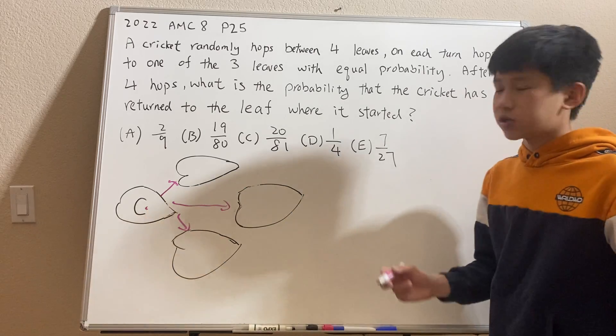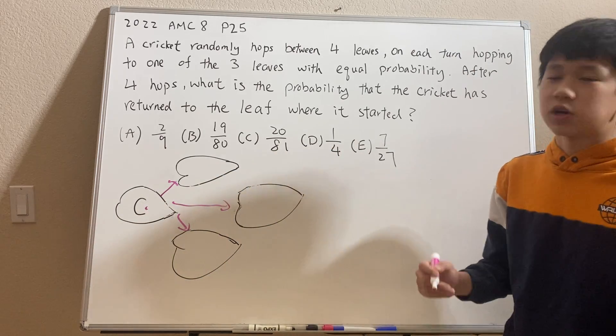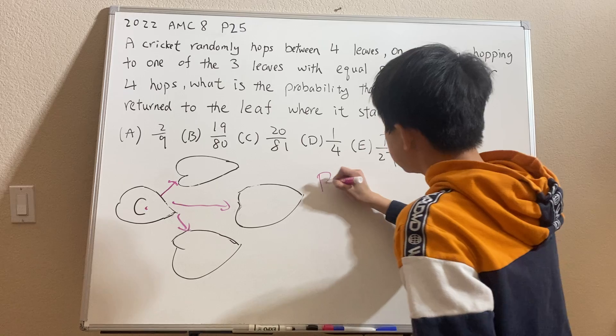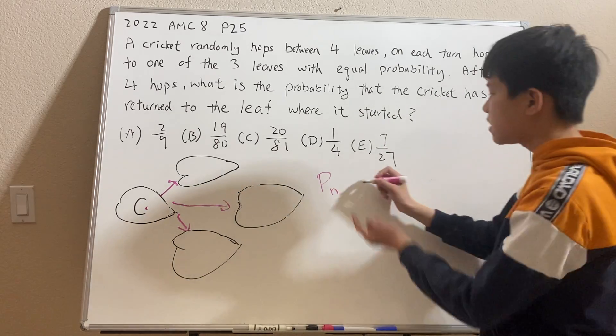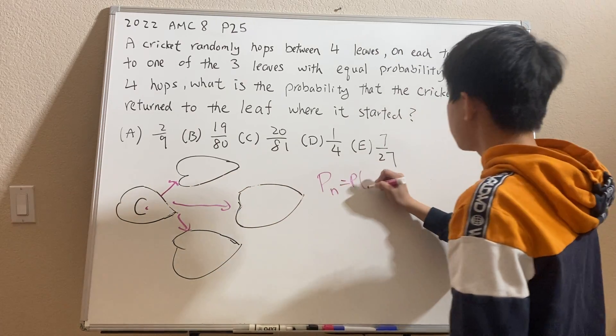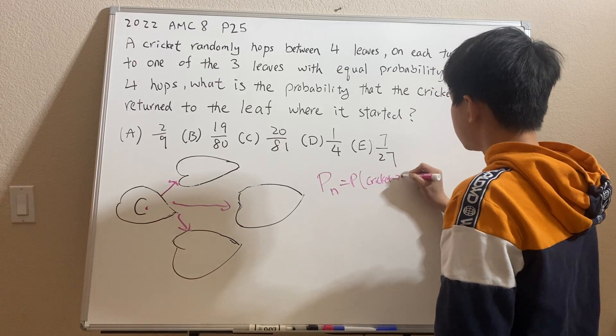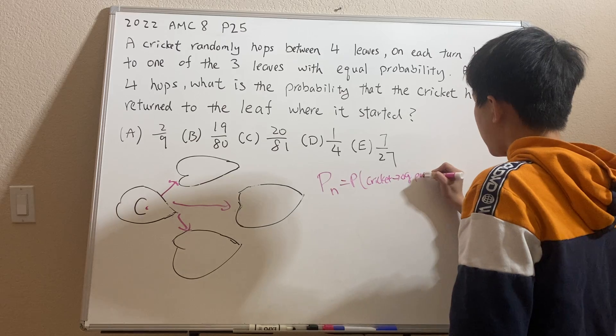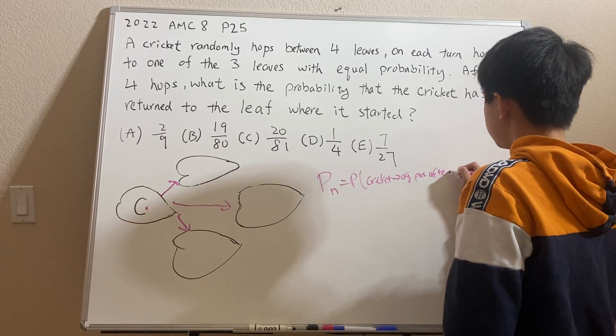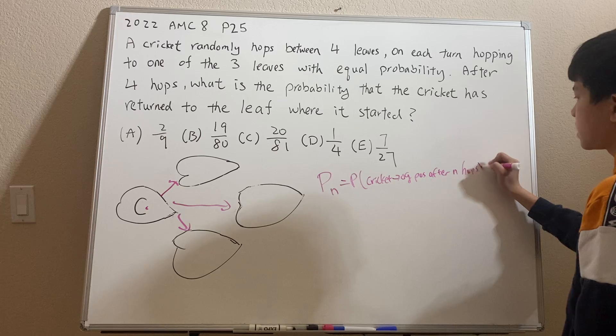And usually when we do recursion, we usually want to define what the recursion is. So it would be very suitable to define P(n). So P(n) will basically stand for the probability of the cricket returning, so cricket going to the original position after n hops. So we can define our recursion by this statement.